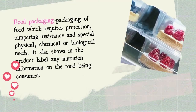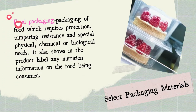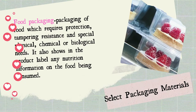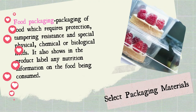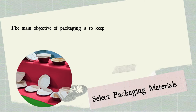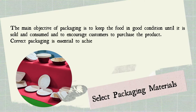Let us now define food packaging. Packaging of food requires protection, tampering resistance, and special physical, chemical, or biological needs. It also shows, at the product level, any nutrition information on the food being consumed. Always remember that the main objective of packaging is to keep the food in good condition until it is sold and consumed, and to encourage customers to purchase the product. Correct packaging is essential to achieve both these objectives.